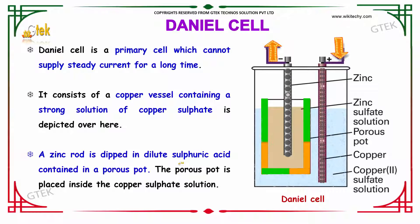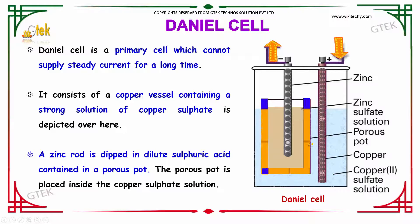Further moving about the Daniel cell, it's a primary cell which cannot supply steady current for a long time. It has your zinc with the zinc sulfate and you got your porous part with the copper and copper sulfate in it, and you got your minus and plus poles here.